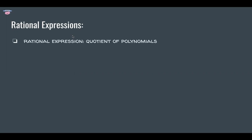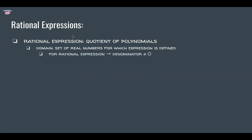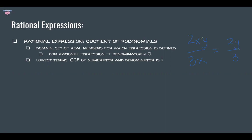Rational expressions are quotients of polynomials. The domain is the set of real numbers for which an expression is defined — for rational expressions, this means the denominator is not equal to 0. A rational expression is in lowest terms when the GCF of the numerator and denominator is 1. For example, if there's an x in both numerator and denominator, it's not in lowest terms; canceling the x gives the simplified form, like 2y over 3.